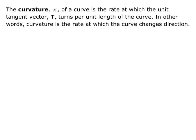The curvature, which we use the Greek letter kappa for, is the rate at which the unit tangent vector capital T turns per unit length of the curve. In other words, curvature is the rate at which the curve changes direction. So kappa equals the rate at which the unit tangent vector turns per unit length of the curve, giving us kappa equals the magnitude of d capital T over dS, where dS is the change in arc length.